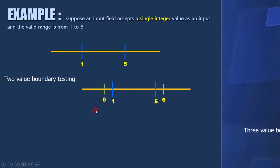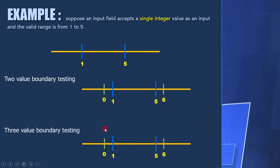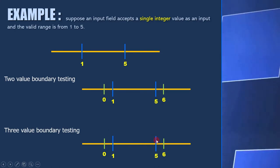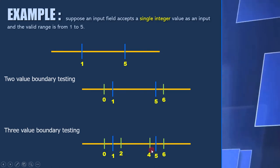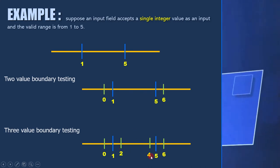For three-value boundary testing, you need to consider two values outside the range and two values inside the range. First we need to take 0 and 6 and then we need to test 2 and 4.